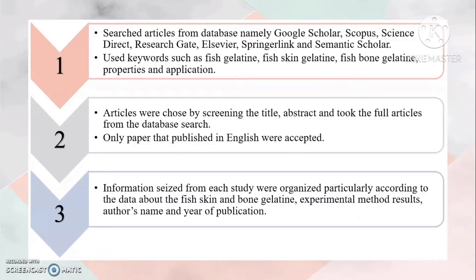For the search strategy, articles were searched from databases namely Google Scholar, Scopus, ScienceDirect, ResearchGate, Elsevier, SpringerLink, and Semantic Scholar. Keywords used included fish gelatin, fish skin gelatin, fish bone gelatin, properties, and application.